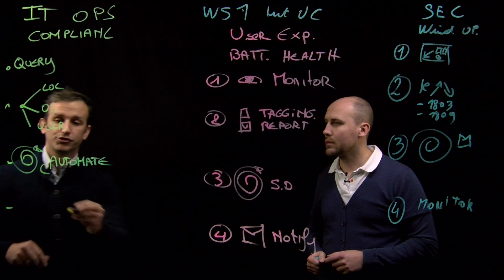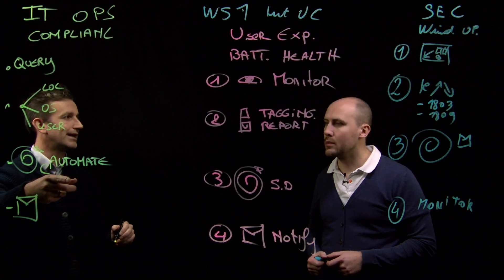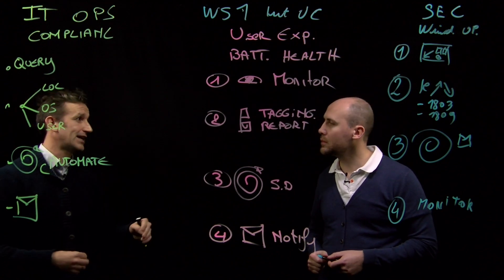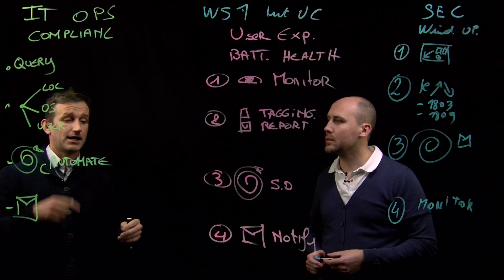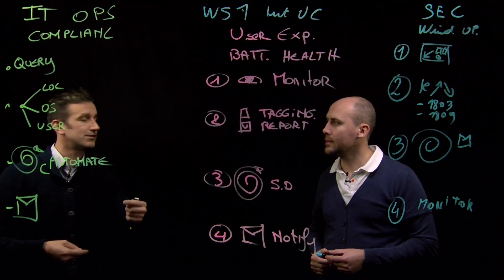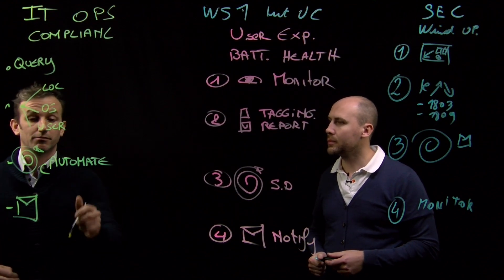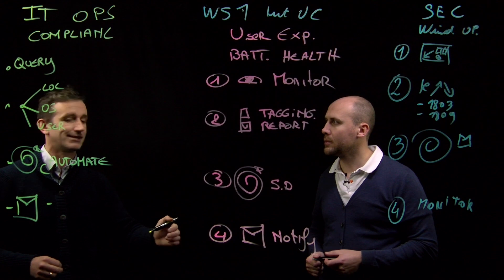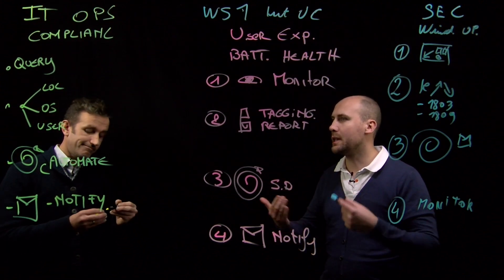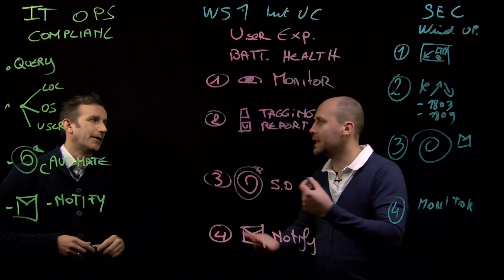The last action is notifying the user that an automated action is happening — they can install the update and wait a little bit. It's an escalated step process: the first time they don't install it, they can still access everything. But after a week we re-notify them, and if they still haven't installed it, we block access. Once they install the update, access is restored.